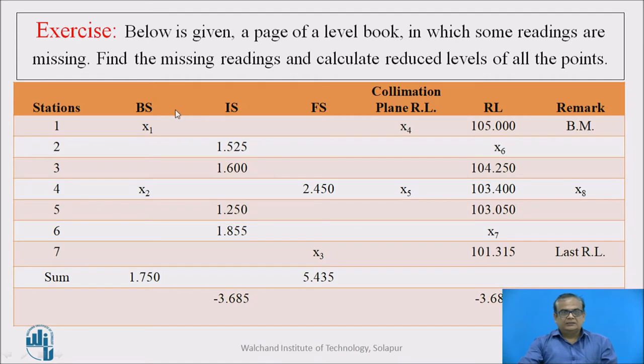So, see here, stations are given back side reading, X1 this is missing one, then intermediate sides are there, four side reading that are the collimation plane RL, RL substations and remarks. First reading is always on benchmark we know. Its RL is known 105.00 but collimation plane RL this value X4 is missing.